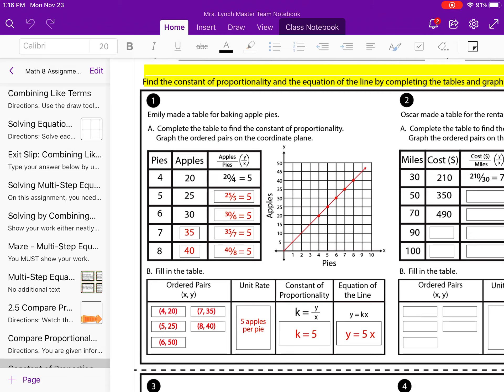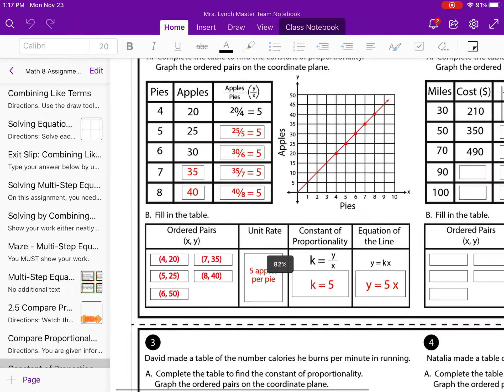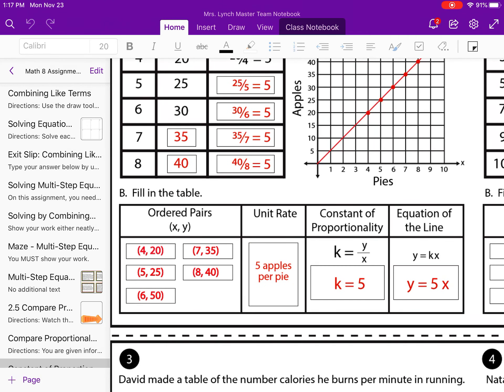So if you notice, what this table is telling us is it's saying that she made four pies, and it took her 20 apples to make four of those pies. When she made five pies, it took her 25 apples. So just like the previous lessons, in order to figure out how many apples per pie that she needs, you just divide. So if you notice there in that table, every time they divided the two numbers, the apples and the pie ratio, it ended up being five. So what that means, if you go down to the bottom where it says unit rate, what that means is it takes five apples to make every single pie.